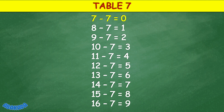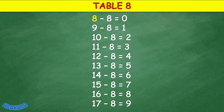Table 7: 7 minus 7 equals 0, 8 minus 7 equals 1, 9 minus 7 equals 2, 10 minus 7 equals 3, 11 minus 7 equals 4, 12 minus 7 equals 5, 13 minus 7 equals 6, 14 minus 7 equals 7, 15 minus 7 equals 8, 16 minus 7 equals 9.